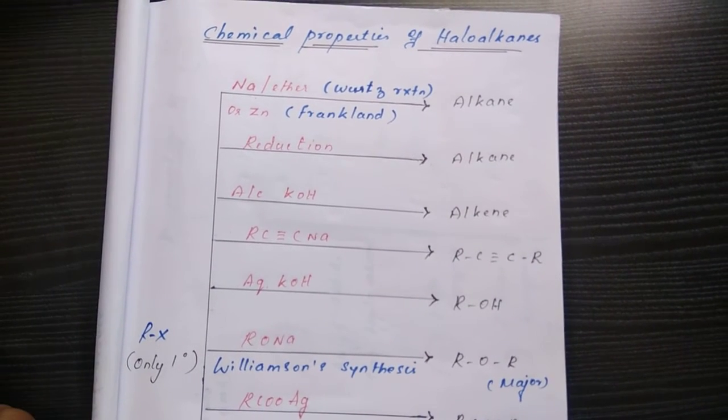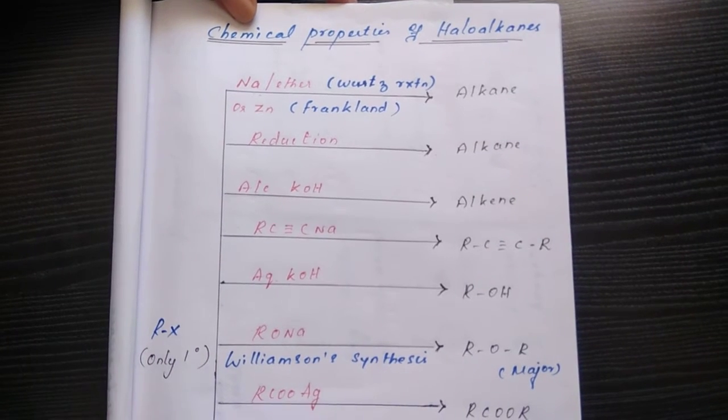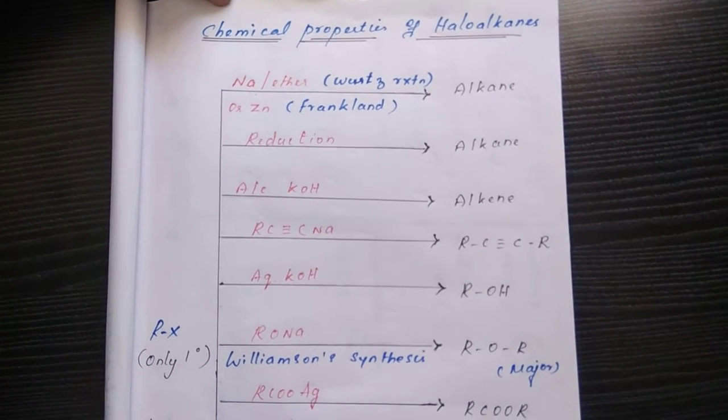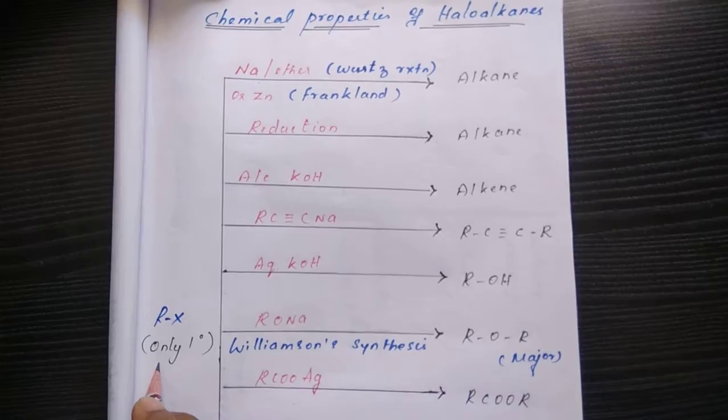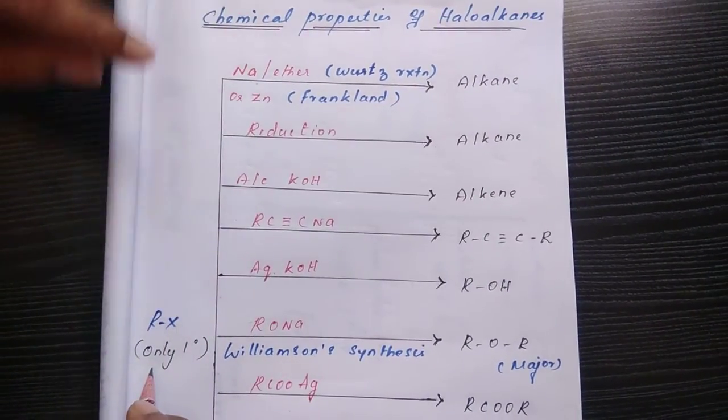Dear students, in this session we are going to discuss chemical properties of haloalkanes. Previous session we discussed the preparation of alkyl halides. Here, 1 degree alkyl halides undergo the following reactions. We'll see them one by one.